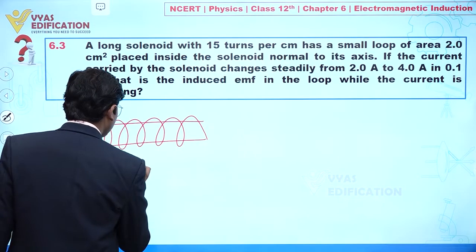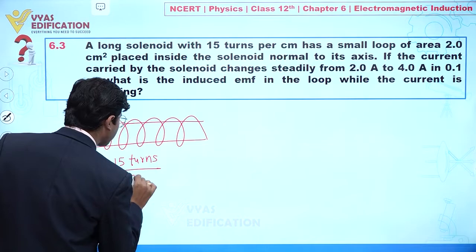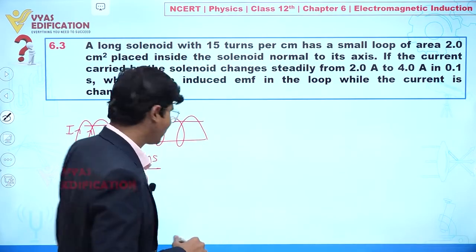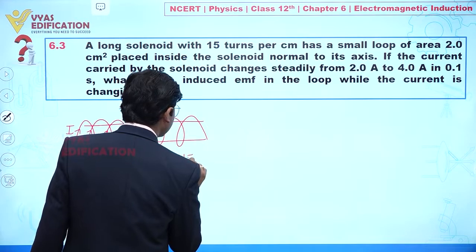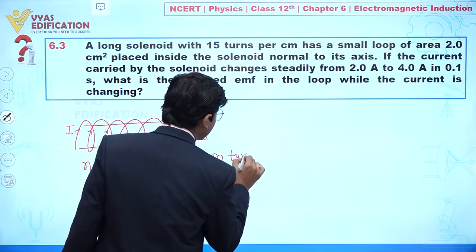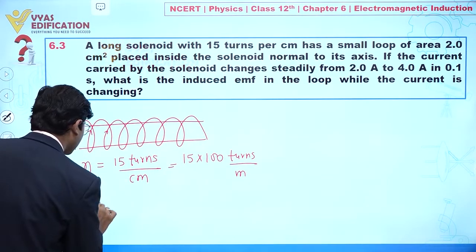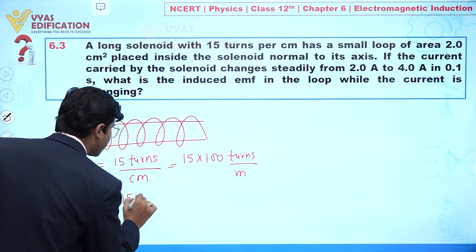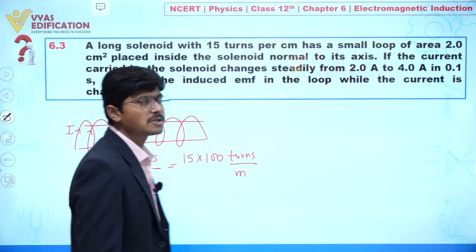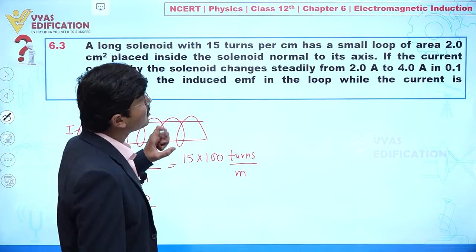The solenoid has 15 turns per centimeter. We can convert this into turns per meter: 15 × 100 = 1500. So the number of turns per meter, n, is 1500 turns per meter.